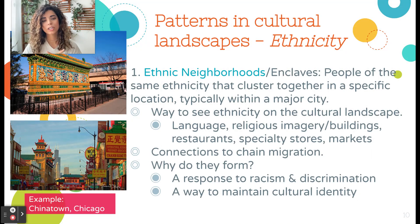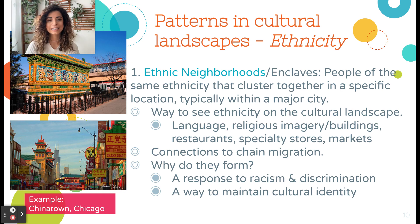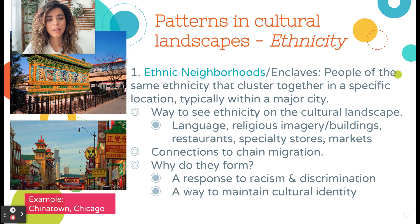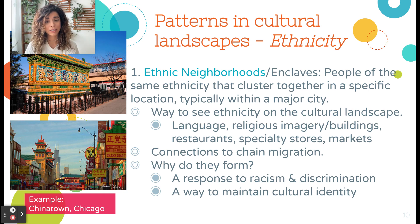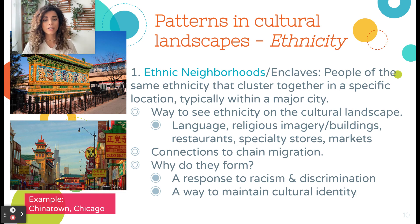Ethnic neighborhoods or ethnic enclaves are formed when people of the same ethnicity cluster together in a specific location, usually within an urban area. This can be seen in the cultural landscape through language on signs, religious imagery or buildings like temples and churches, restaurants specializing in that ethnicity's food, and specialty stores selling items from their home country. This has connections to chain migration — when people move to a new place, others tend to follow.